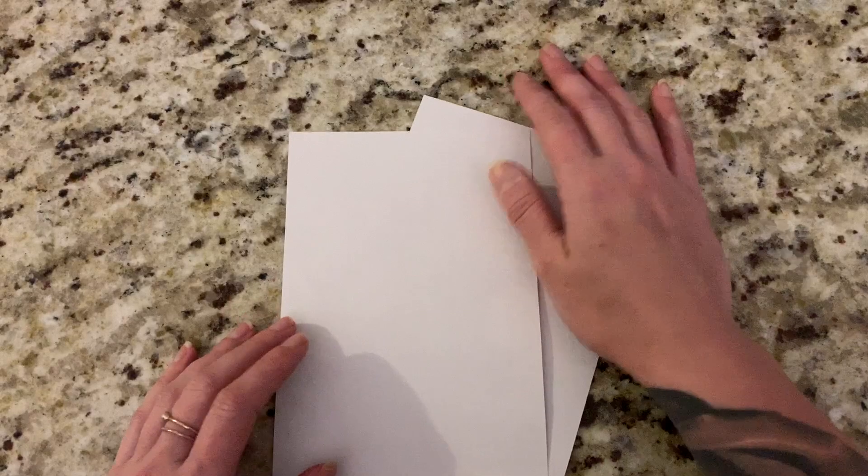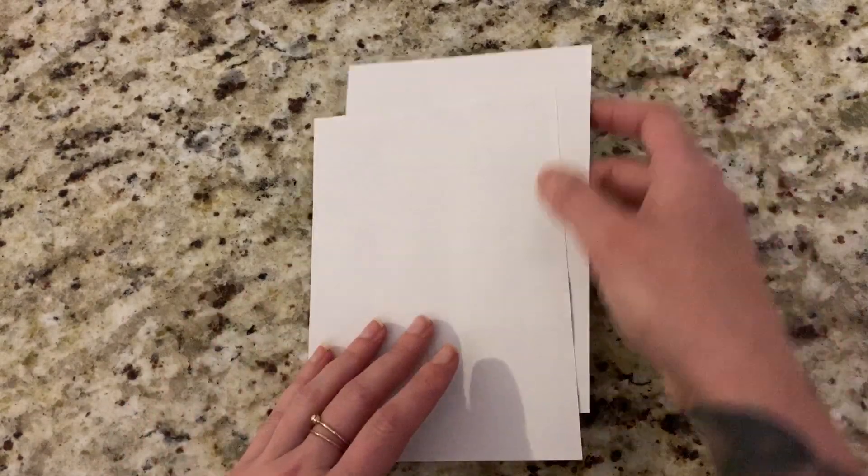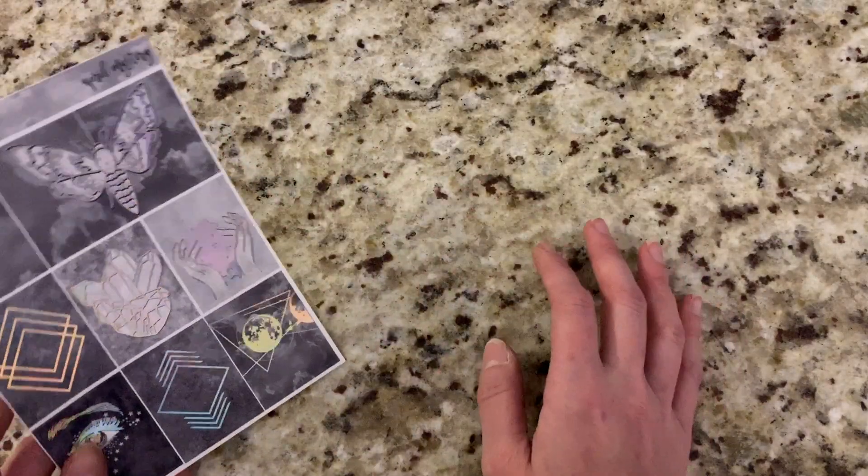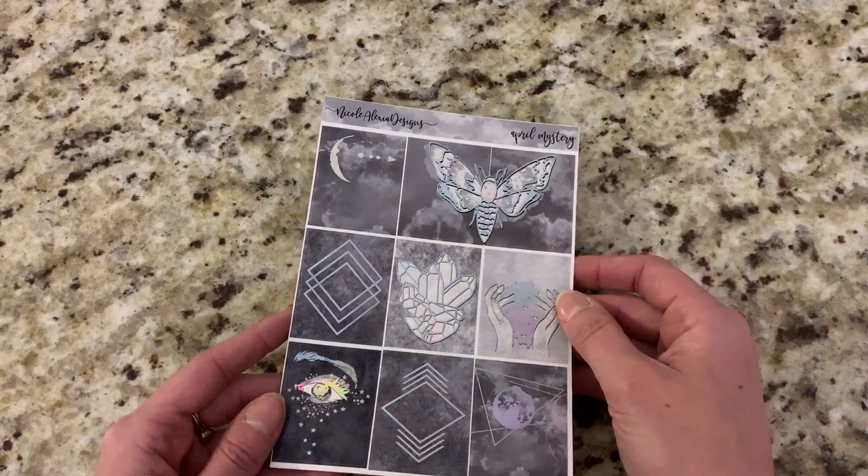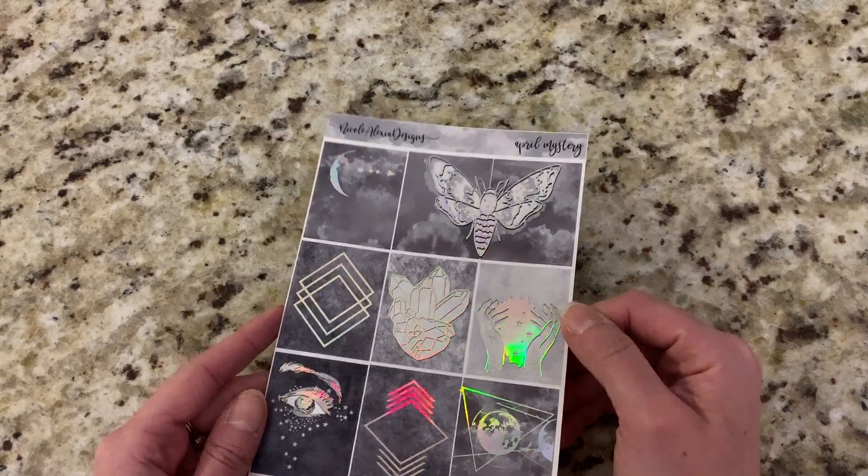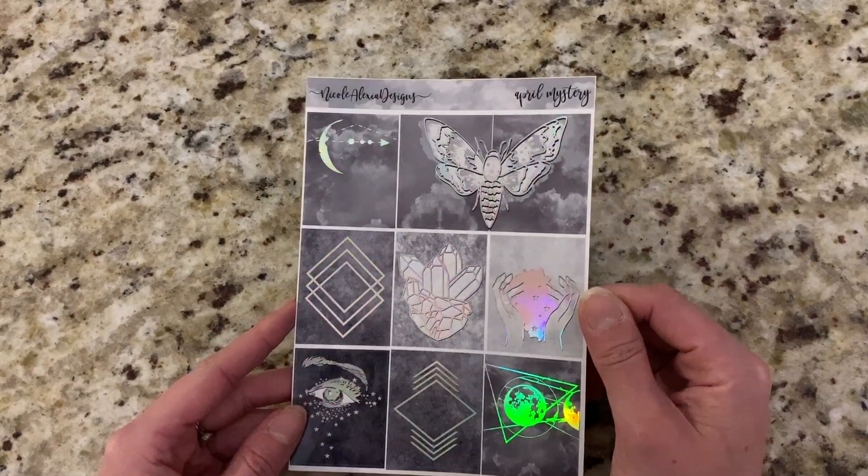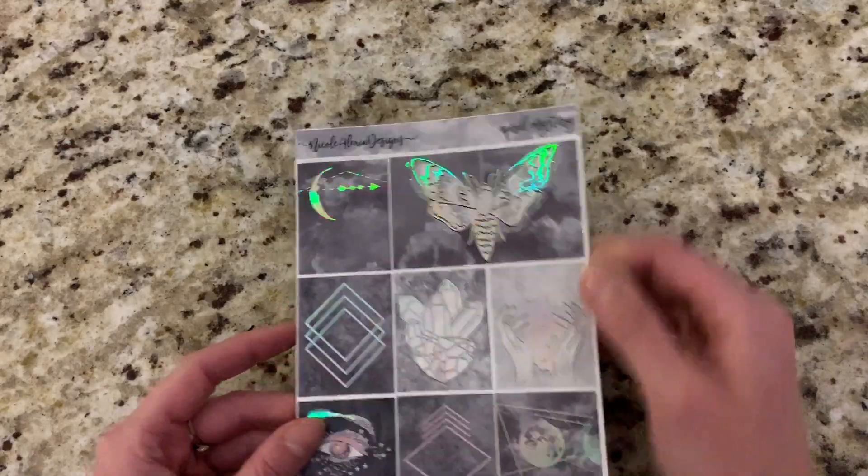For the April mystery kit, I decided I wanted to do something totally different. So this is really different from anything that we've done before, and it doesn't really go with the month of April. It is all gray and black watercolor with holographic foiling. Every single full box in this kit has foil, which is a bit much, but I think it looks really nice.